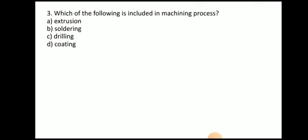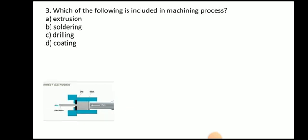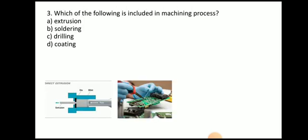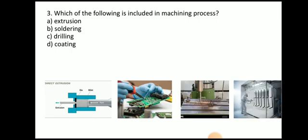Next question: which of the following is included in the machining process — extrusion, soldering, drilling, or coating? Here you can see the extrusion process, the soldering process for making electrical connections, the drilling process, and the coating process. The answer is drilling. Drilling is the machining process.